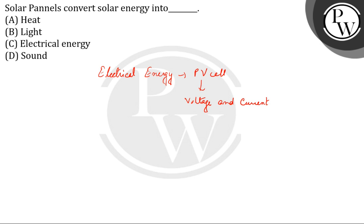So basically, in a solar cell panel, solar energy is converted into electrical energy. Option C — electrical energy — is the correct answer.